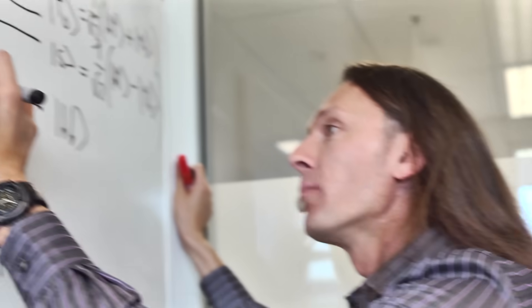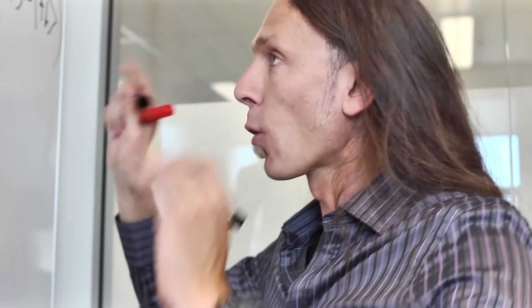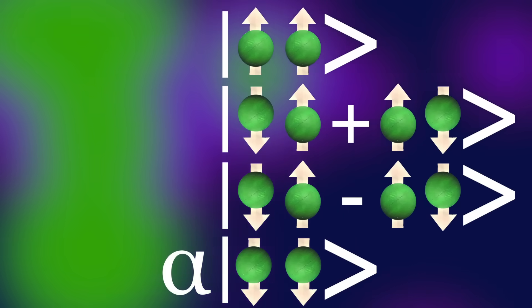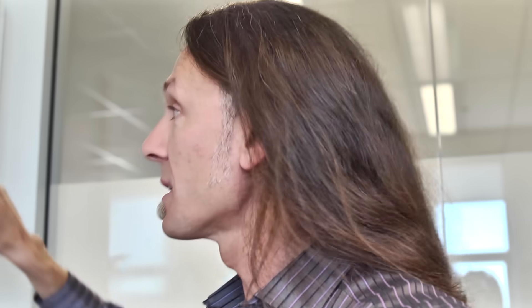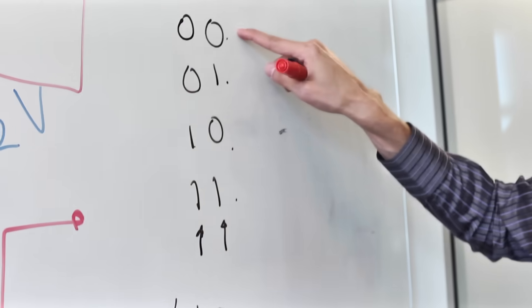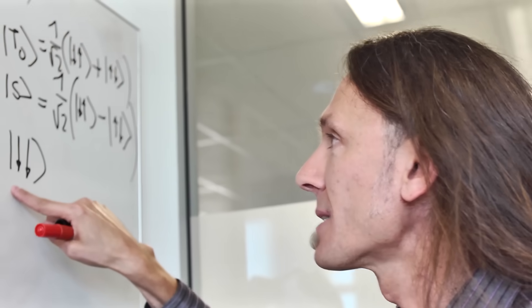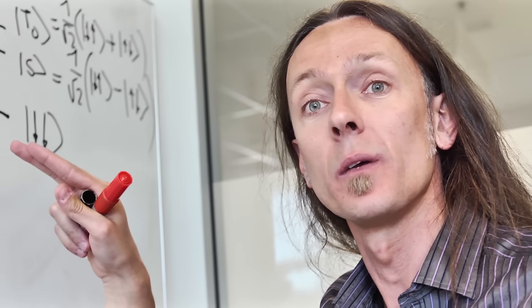Here instead, quantum mechanics allows me to make a superposition of each one of these four states. So I can write a quantum mechanical state that is some coefficient times this, plus some coefficient times that, plus some coefficient times that, plus some coefficient. So to determine the state of this two-spin system, I need to give you four numbers — four coefficients — whereas in the classical example of two bits, I only need to give you two bits. This is how you understand why two qubits actually contain four bits of information.